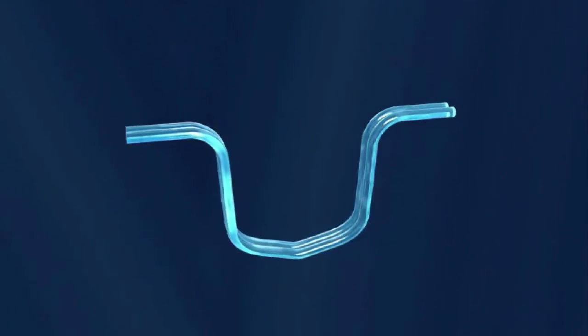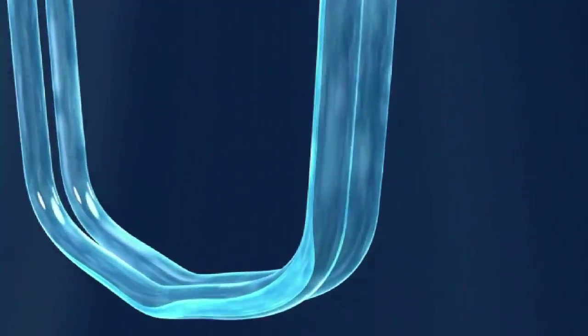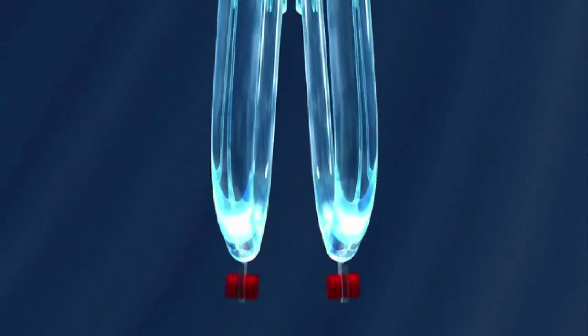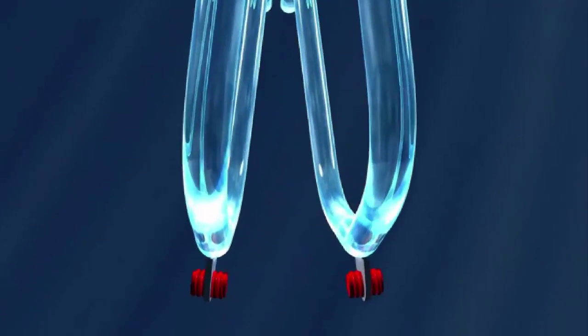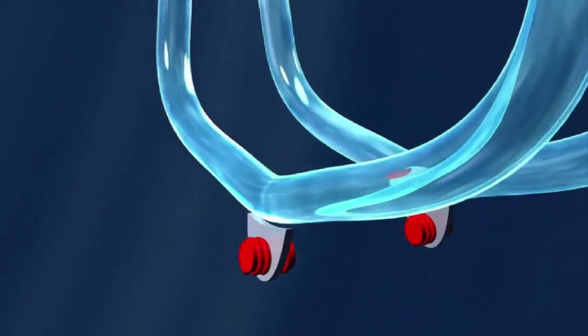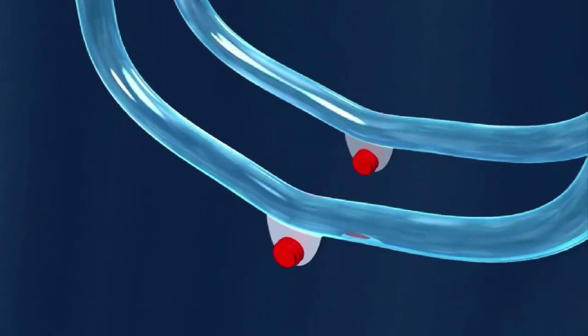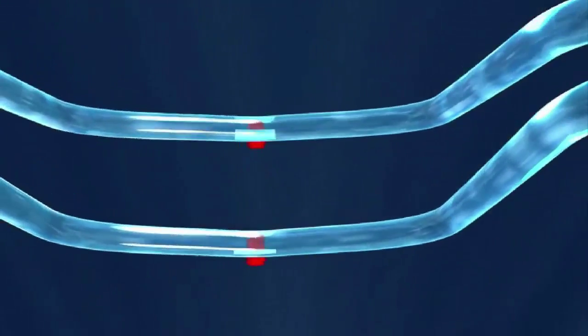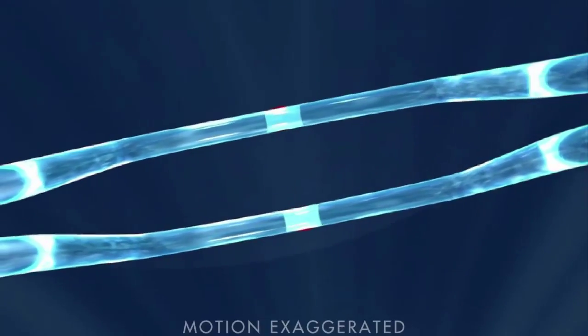For practical exploitation of this principle, it is sufficient for the two measuring tubes to perform oscillations on a small section of a circular path. This is achieved by exciting the measuring tubes with an electromagnetic exciter in its first resonance frequency.